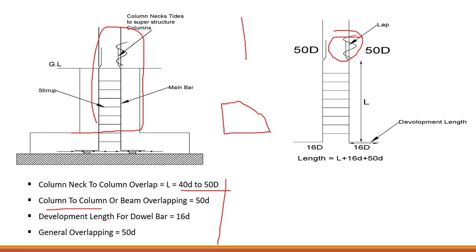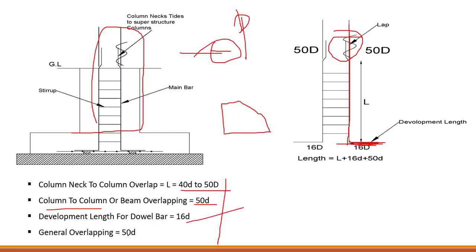For column-to-column overlap in the superstructure, or for beam overlap, the value is 50d — 50 times the bar diameter. The development length of a longitudinal bar in a column is 16d. For general overlapping, you can use 50d.